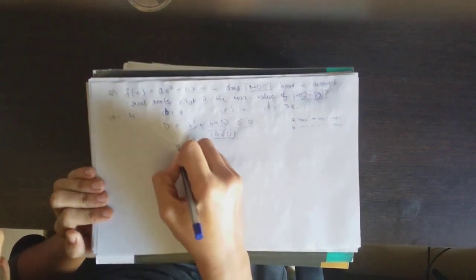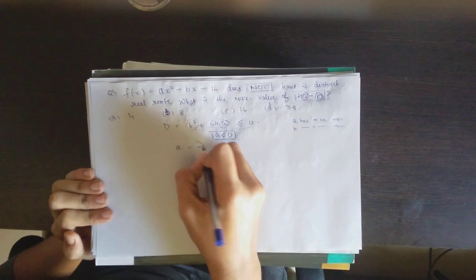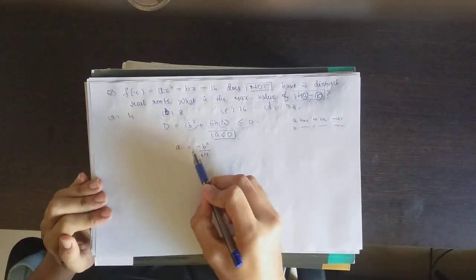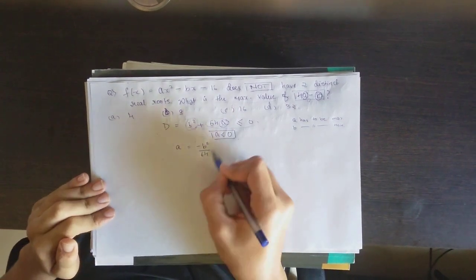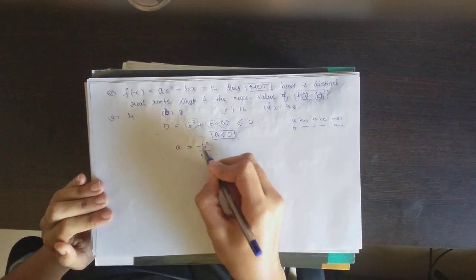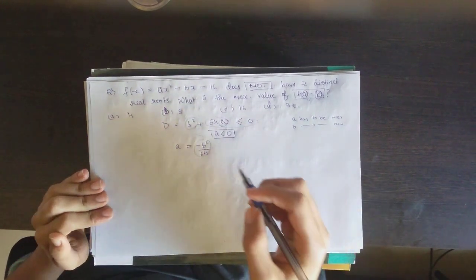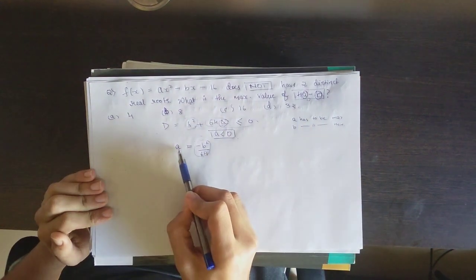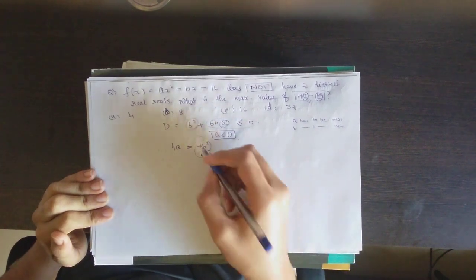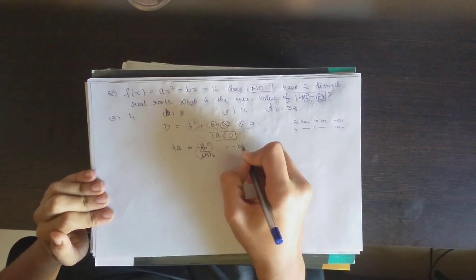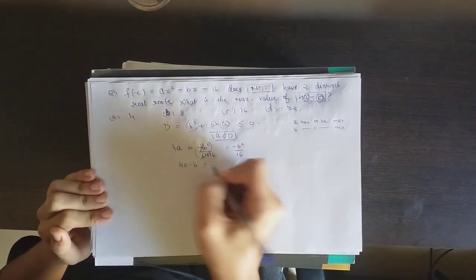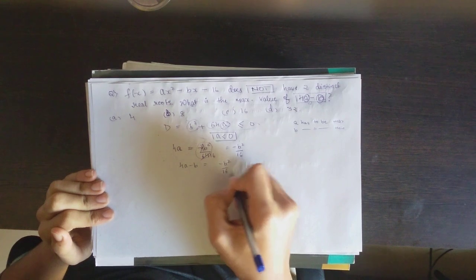So let's find out what is the value of a. From this equation, a is equal to minus b squared by 64. Since I want its maximum value, I am equating it to this value. So if this has to be the maximum of a, let me find what is 4a — I'll multiply by 4 on both sides, which gives minus b squared by 16. So 4a minus b is equal to minus b squared by 16 minus b.